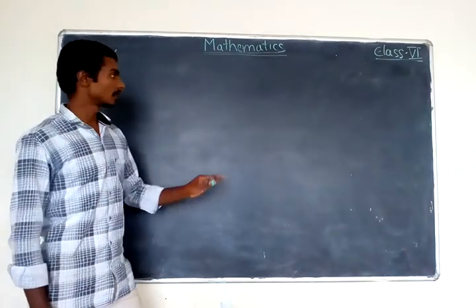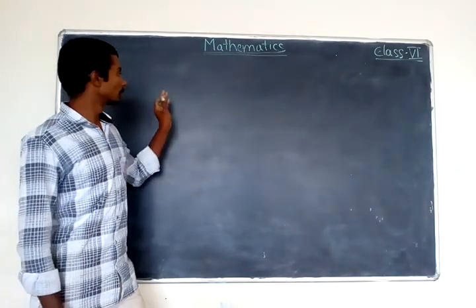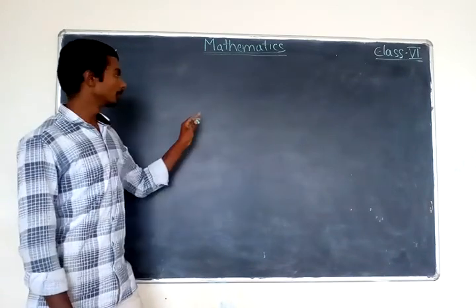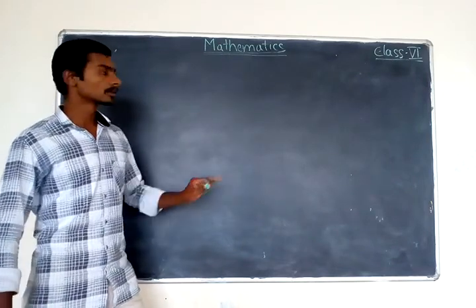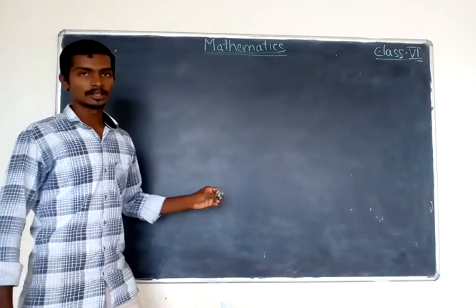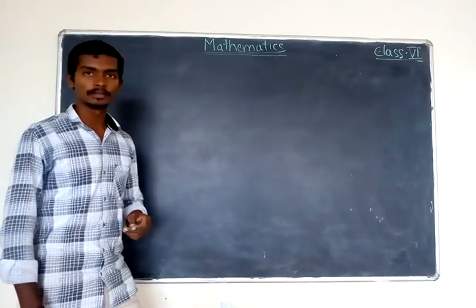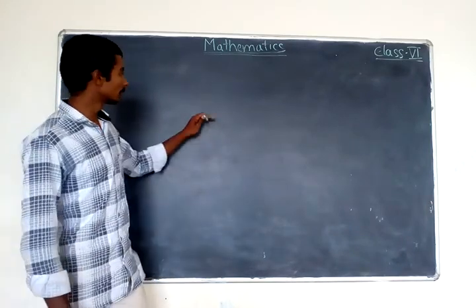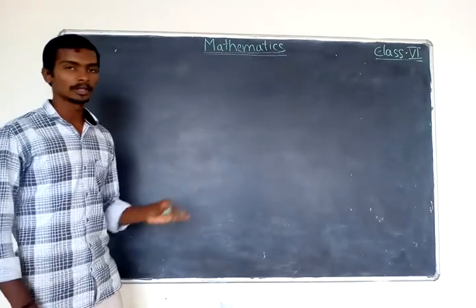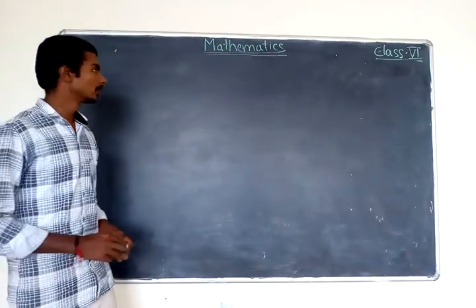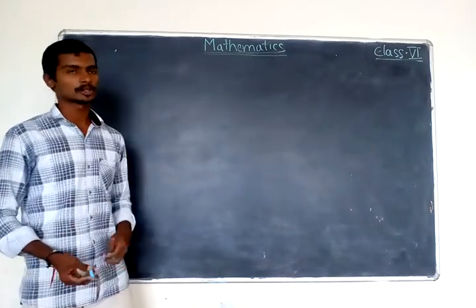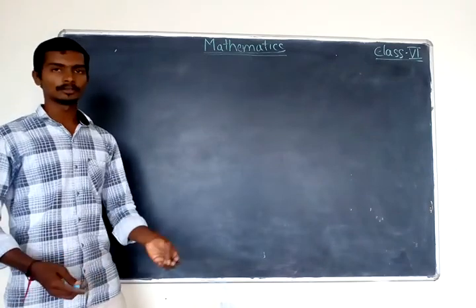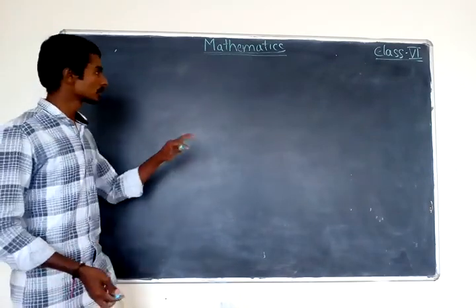In the previous class I told you that to do any estimation, we will take an approximate number. If the number is a two-digit number, we will approximate it to the nearest tens. If the number is a three-digit number, we will approximate it to the nearest hundred. In the same way, if the number is four-digit or five-digit, we will approximate to thousands and ten thousands respectively.